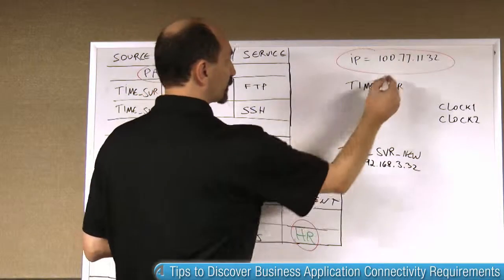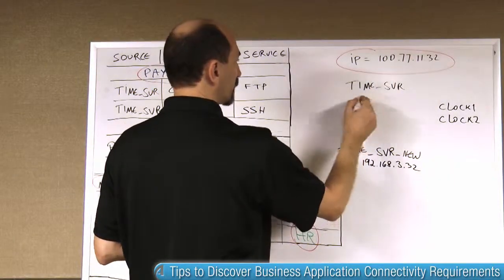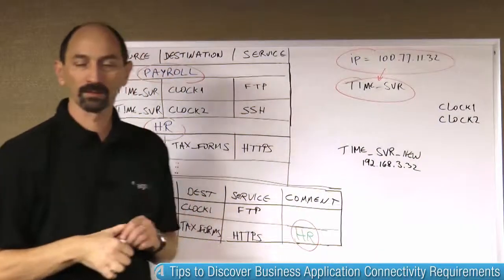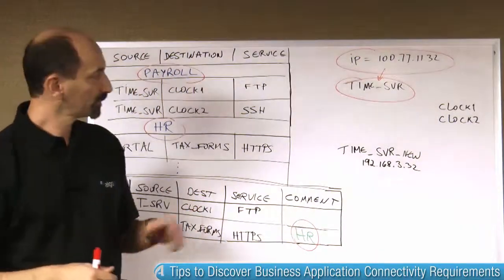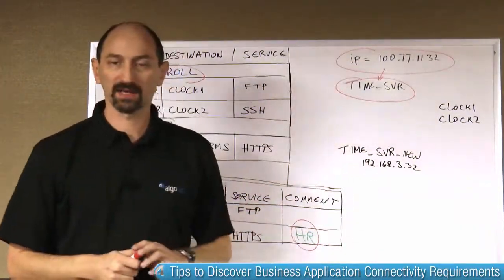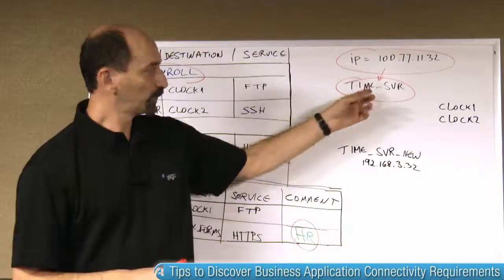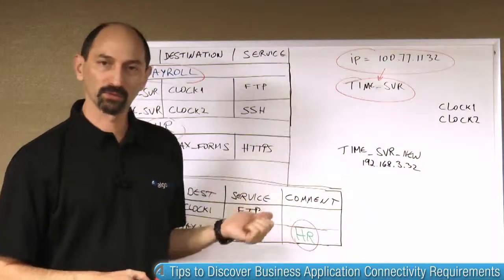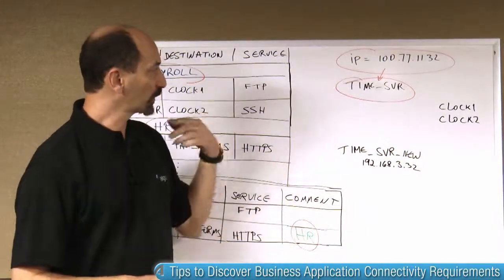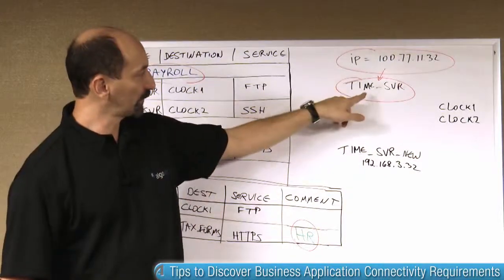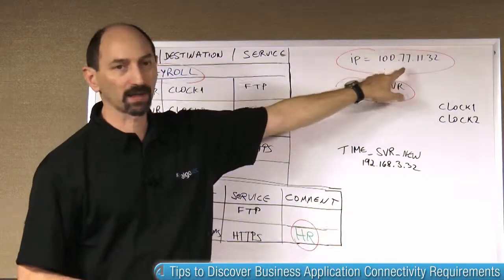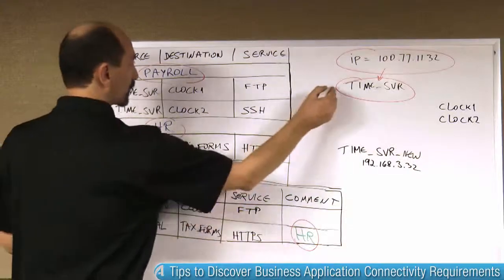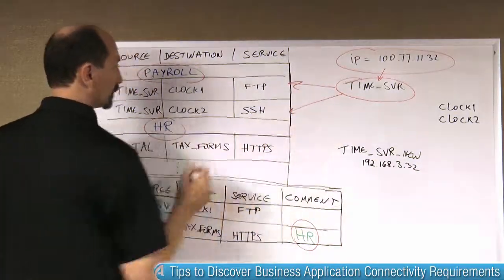For instance, from that IP address you can discover the name of an object that defines that IP address. If you know the name of the object, you can go back to your firewall rules and search for all the rules that refer to that object or to that IP address. And maybe you'll discover this rule and this rule.